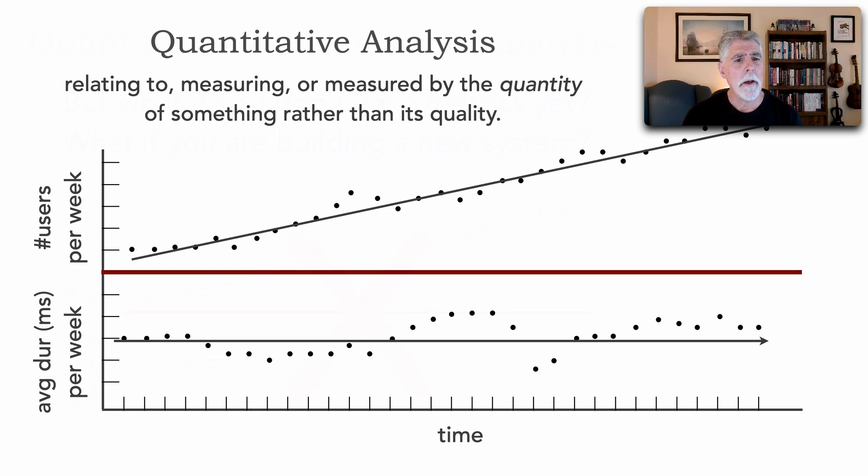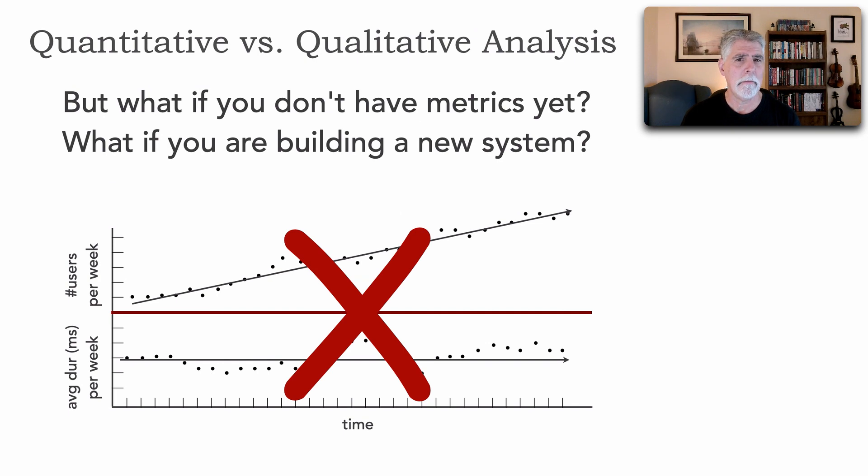But what if we don't have metrics? What if they're not available to us? What if we're trying to make decisions about changing something? Or what if we're building a new system? We can't use quantitative analysis to make our decisions in that case because we don't have those metrics. And that's exactly where qualitative analysis comes in.